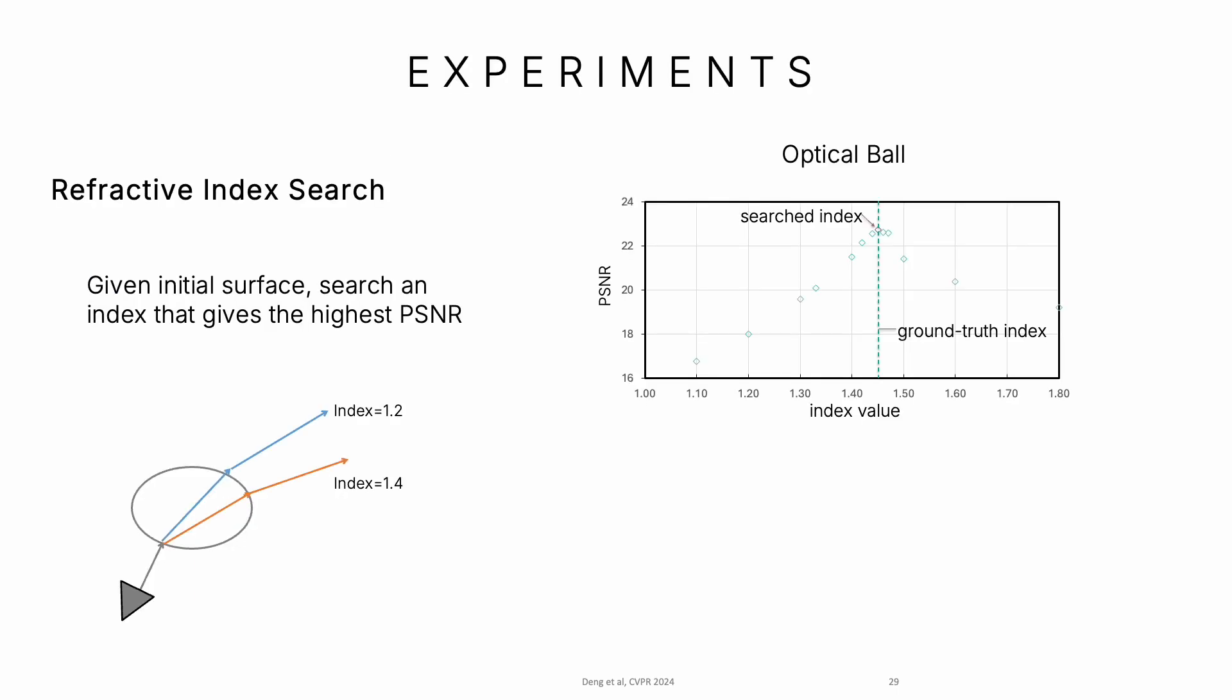Here I show how to select the refractive index. Given an initial surface, we search for the index that gives the highest PSNR. On the right side, we show our searched index is the same as the ground truth index.